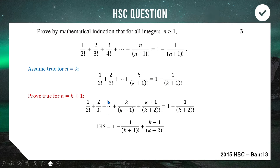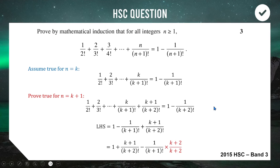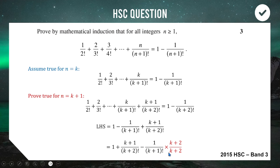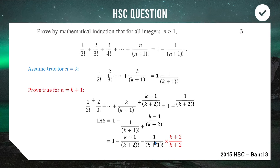We now have 1 − 1/((k+1)!) + (k+1)/((k+2)!). To make the algebra nicer, swap the order: put the plus term first and the minus second. To combine the fractions, we need a common denominator. The second fraction has denominator (k+1)!, so we multiply its top and bottom by (k+2), turning (k+1)! into (k+2)! and the numerator into (k+2).